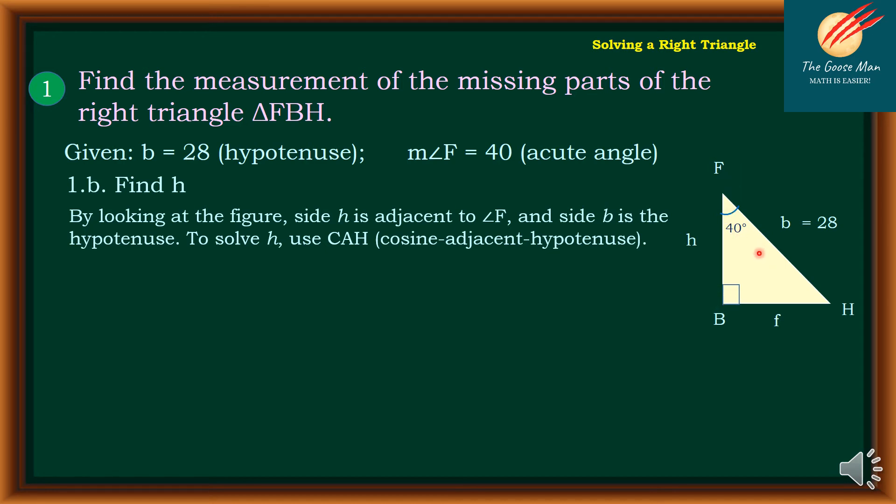To solve this, use CAH, the cosine adjacent hypotenuse. Recall that cosine F is equal to adjacent over hypotenuse. So that is h over b, our given.